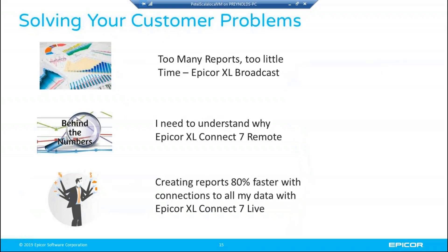Let's talk about what we're trying to solve with Excel Connect 7 by identifying the different types of users. The first is a broadcast use case — you've got lots of reports to get out to people. For example, you have a commission report and 20 different salespeople. The Epicor Excel Broadcast solution automates taking a report template in Excel and generating all those different versions by department or location, then automatically distributing them out.